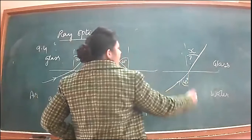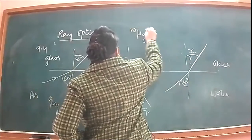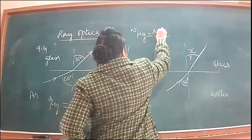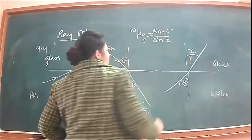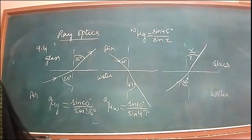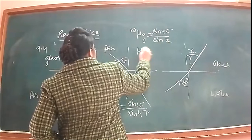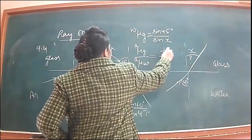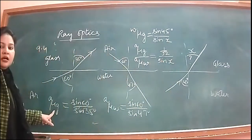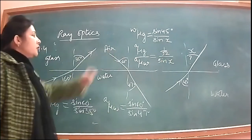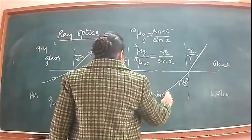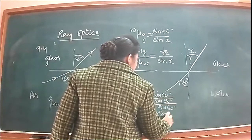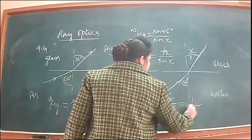The formula is refractive index of glass with respect to water equals sine 45 over sine x. Now we will use compound slab formula: this can be written as refractive index of glass with respect to air over refractive index of water with respect to air, which equals sine 45 by 1 by root 2 over sine x. Put the values: sine 60 over sine 35 degrees divided by sine 60 over sine 47 degrees equals 1 by under root 2 sine x.